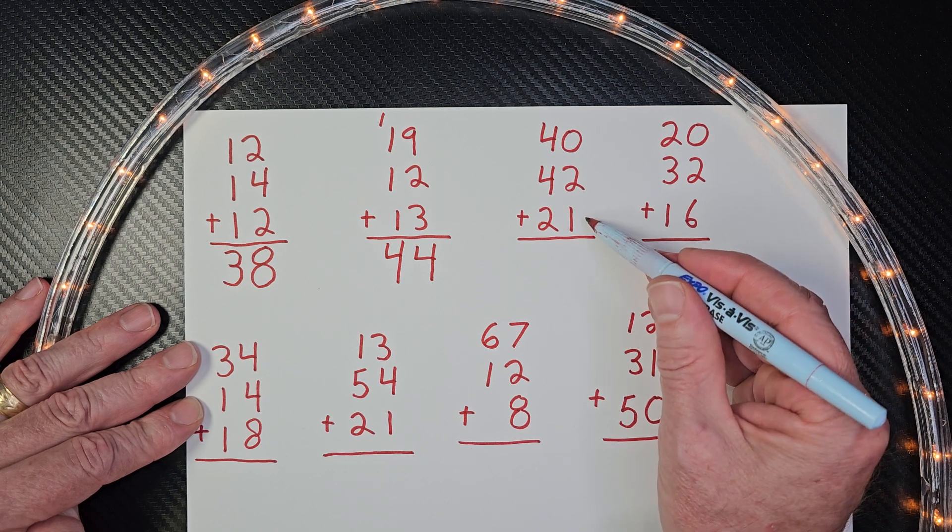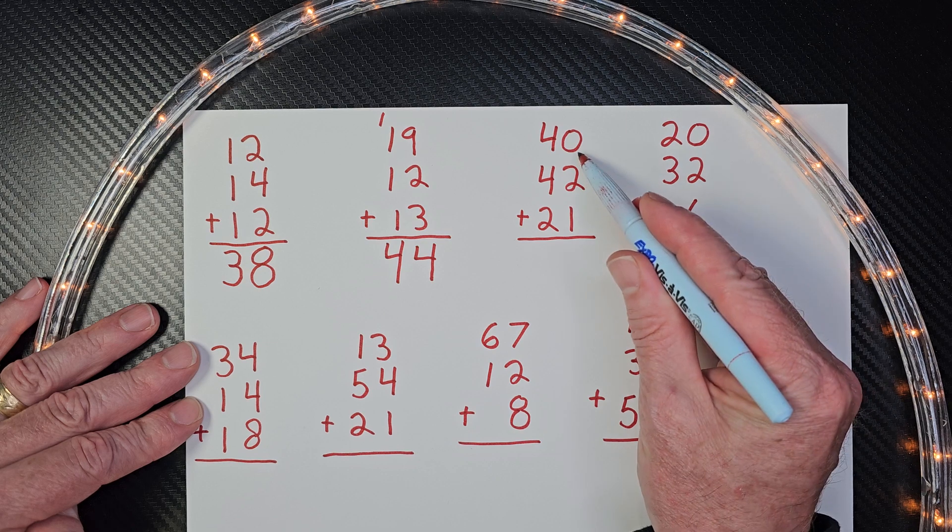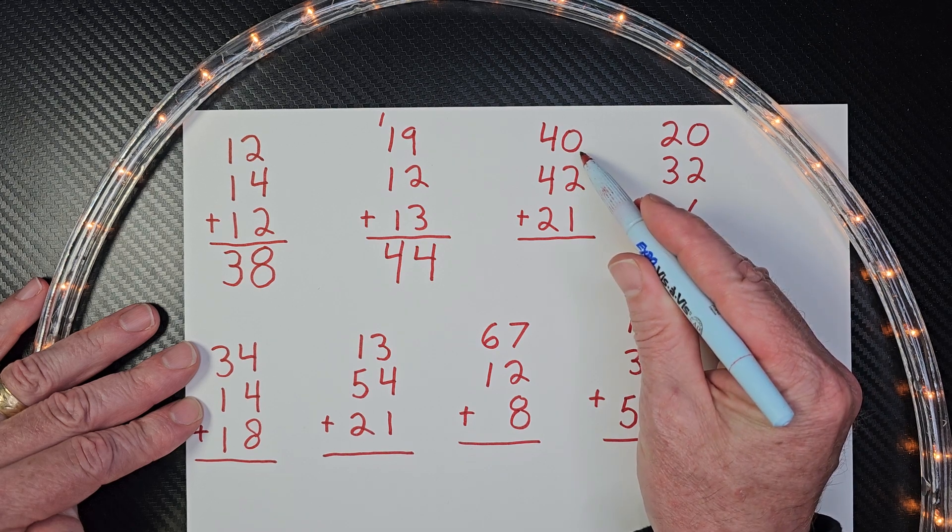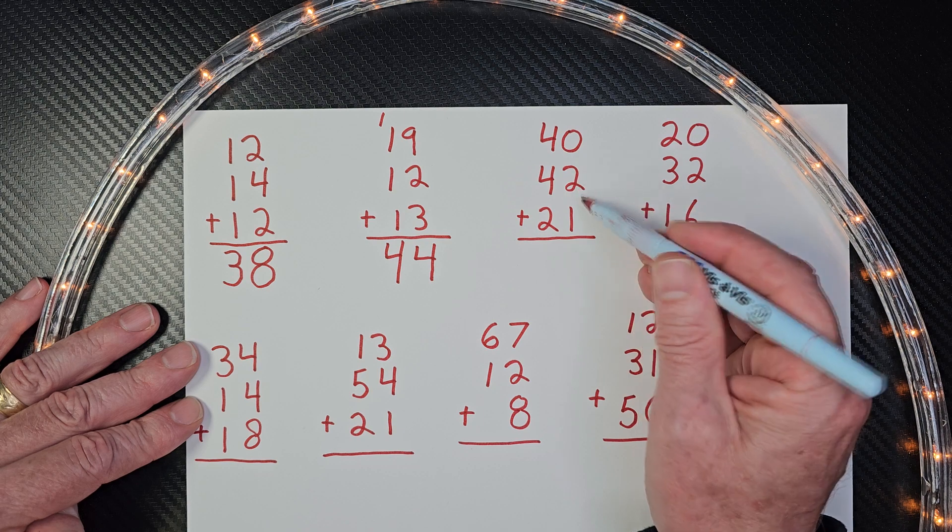Okay, let's go on to the third problem. I have two plus one is three, but I have a zero right there. Don't worry about it. That is nothing. Nada. Zilch. Zip. So we just have two plus one is three.